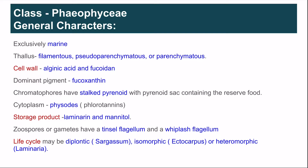Fluorotannins are polyphenols which act as a chemical defense against herbivory and also protect the cell from UV radiation. The storage products in brown algae are laminarin, which is a beta-1,3 linked glucan, and mannitol, which is a sugar alcohol. Mannitol also has an osmoregulatory role in the cell.